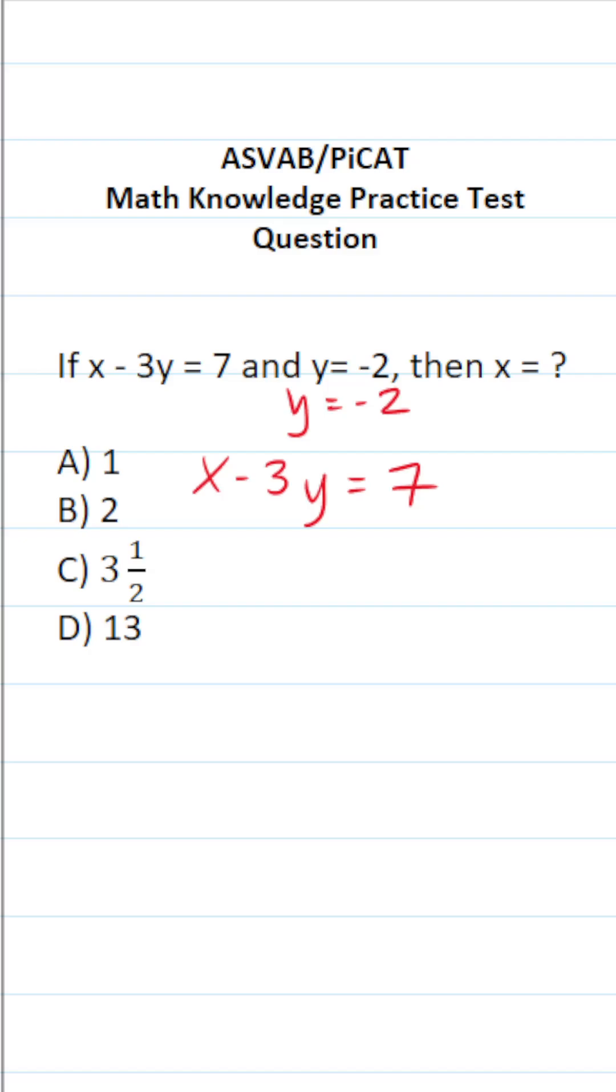In this case, we're given the value of y, we know it's negative 2, and we want to solve this equation for x. So the first thing I'm going to do is plug in negative 2 for y accordingly. This becomes x minus 3 times negative 2 equals 7.